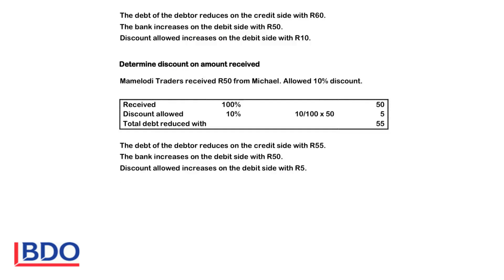Mama Lordi Traders received 50 Rand from Michael and allowed 10% discount. The amount received is 100% and equals 50 Rand. The discount is 10% on that 50 Rand, so the discount is 5 Rand. We will decrease his account with the amount received of 50 Rand and the discount, so his account will be credited with 55 Rand.